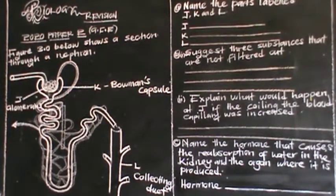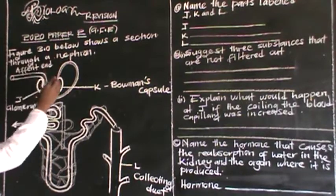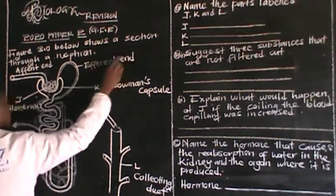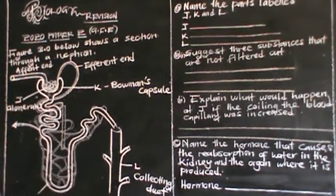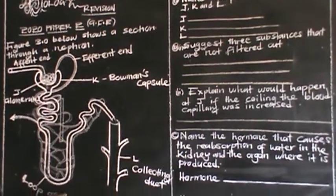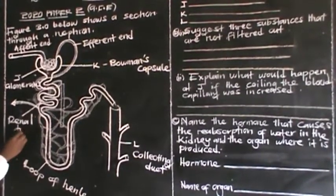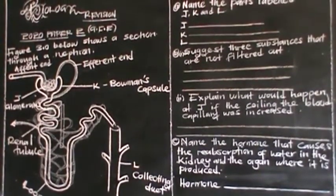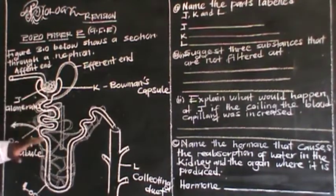We have also got other parts: the afferent arteriole, the Bowman's capsule, the glomerulus, the collecting duct, the loop of Henle, and the renal tubule. Sometimes during the exam you may be asked to identify the processes that take place at different parts of this nephron during urine formation.